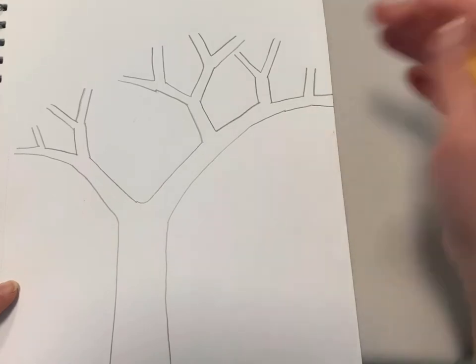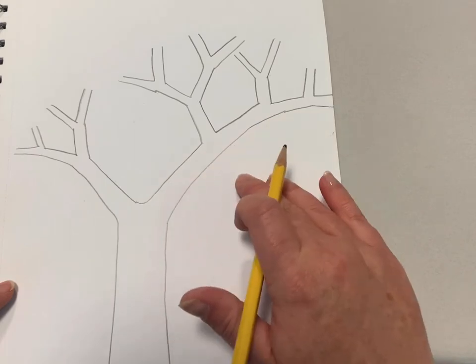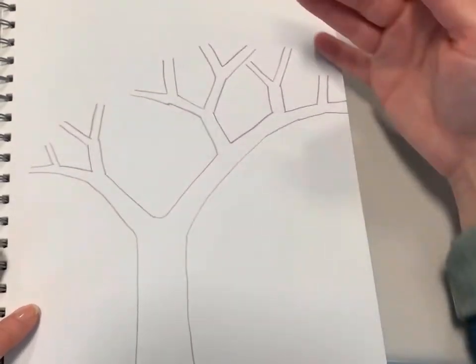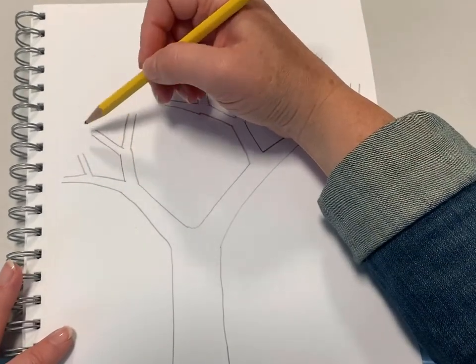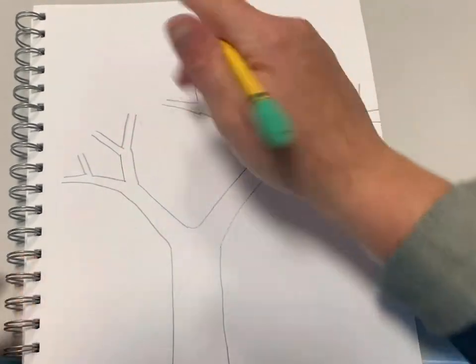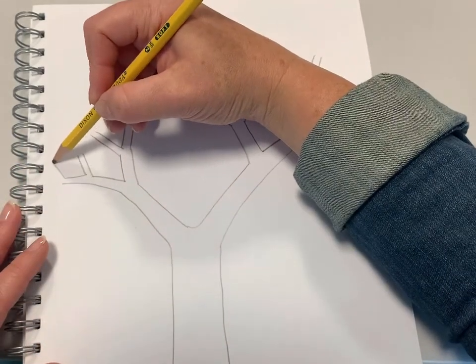And if it gets close to the edge of the page, just draw it going right off the page. That's fine, there's no rule that says it has to stay on the page. So now we have a whole bunch of branches to work with and you're going to repeat the same process over and over until your tree goes tall and the branches get thinner and it fills up the whole top of the page.